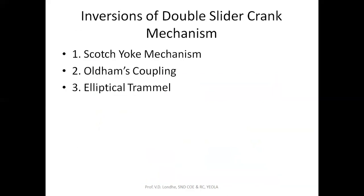By fixing different links, we get different mechanisms — and this phenomenon is called inversions. The first inversion of the double slider crank chain mechanism is the Scotch-yoke mechanism. The second is Oldham's coupling. And the third is the elliptical trammel.